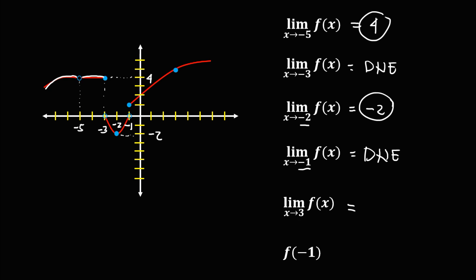Then as x approaches positive 3 — this one is positive 3 — the limit is equal to positive 5. And for this function, f of negative 1: if x is equal to negative 1 and this one is the shaded circle, so the function is equal to positive 1.